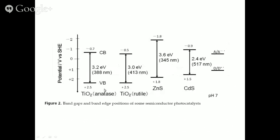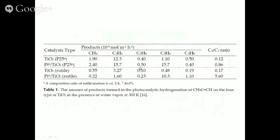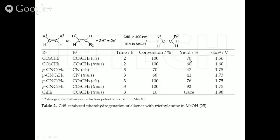In the same way, if we take an olefin with substituents R1 and R2, hydrogenation is also possible. These are cadmium sulfide semiconductors. When photons greater than 400 nm are used with triethanol amine in methanol, this hydrogenation reaction goes to 70% yield, because the redox potentials are once again in a favorable situation.